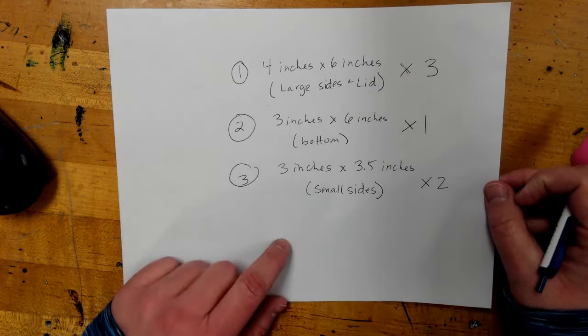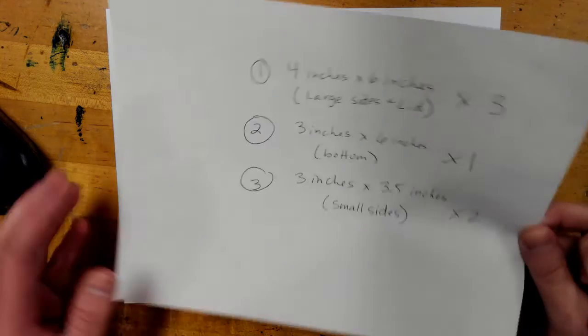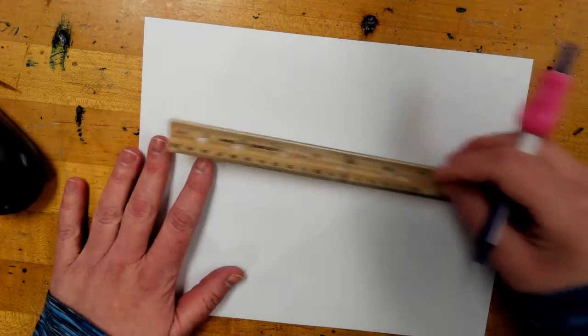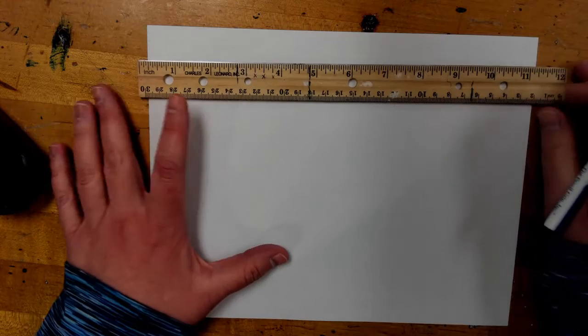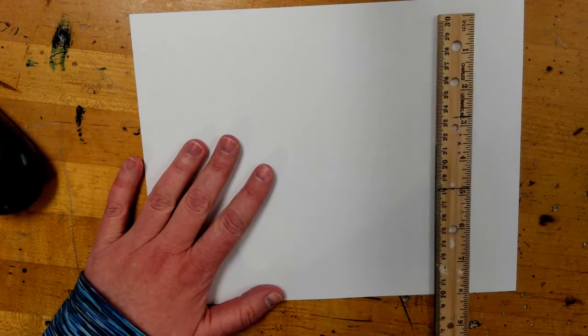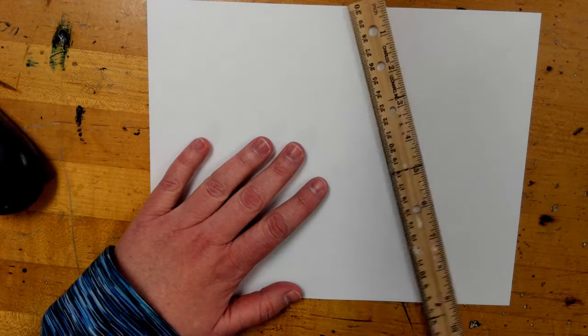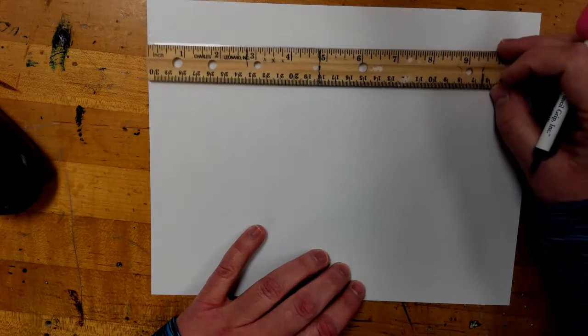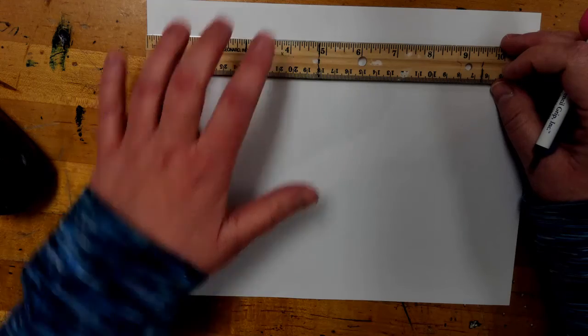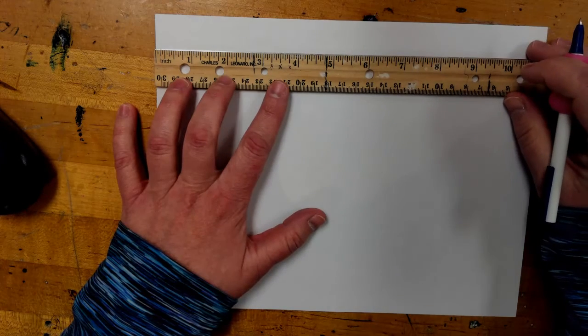When you start your template, I'm going to start measuring out the four by six, or the large sides and lid template. You want to make sure that you pre-plan, so you're going to need to get a ruler and a pencil. What you want to do is figure out how big your paper is. This side is eleven, and then the other side is eight and a half. So, I want to fit more than one template on this piece of paper. If I was to do six along this side, I'd only be able to fit one. I should be able to fit two going this way. So, I'm going to measure out the six going this direction.